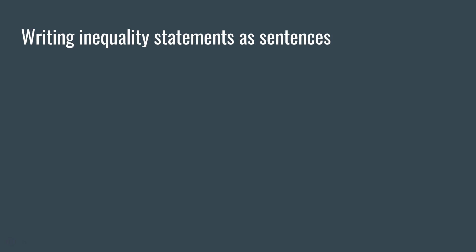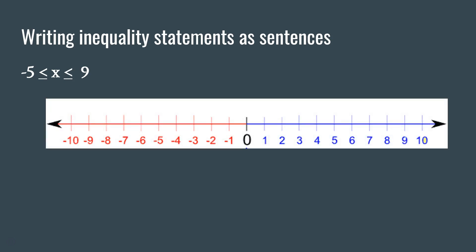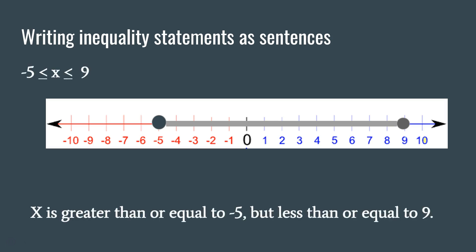Let's look at another example. Suppose we wanted to say x is between negative 5 and 9, including those two points. On a number line, we would have an endpoint at negative 5 and an endpoint at 9, and shade everything in between. We read this as x is greater than or equal to negative 5 and less than or equal to 9.